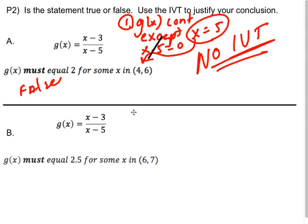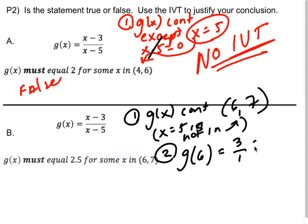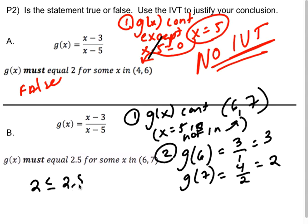But when I go to do the second part, I can see that here, g(x) is continuous on [6, 7], because x equals 5 is not in this window. Then I go ahead and check the second thing, which is what is g(6). Well, g(6) would be 3 over 1, which is 3. g(7) would be 4 over 2, which is 2. Sure enough, 2 is less than or equal to 2.5, which is less than or equal to 3 check. So this is true by the IVT.